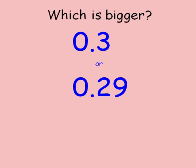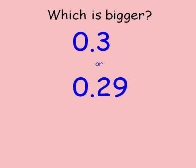Here's another one. Press pause and write down your answer. When you're ready, press play. The bigger number is 0.3. In the same way as before, I can make the numbers both the same length, and then look at them carefully. There are no units in either of the numbers, but this number here has three tenths and this one only has two tenths, so this one must be bigger. 0.3 is bigger than 0.29.